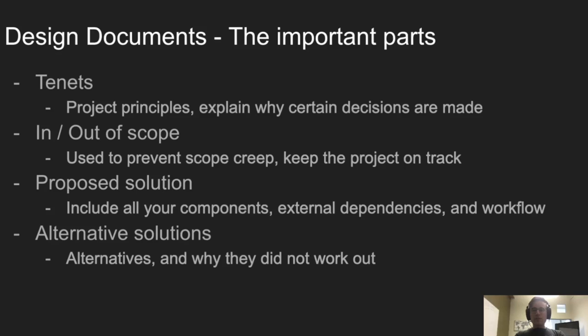The second most important component is what is in and out of scope. Having a list of things in scope will help prevent scope creep. Throughout your implementation process you'll likely come up with cool ideas you want to add, but these will ultimately delay your project, and if they weren't in your design document to begin with they're probably not that important. Things that are out of scope are problems that won't be addressed in this revision, but which you're aware of.